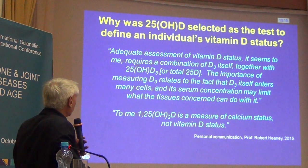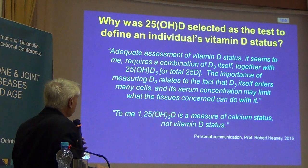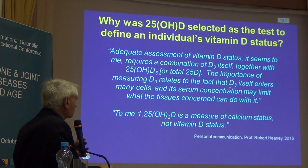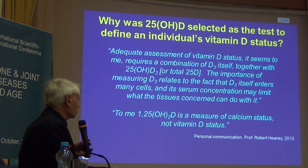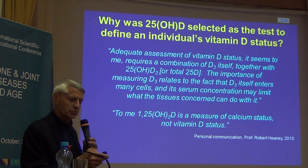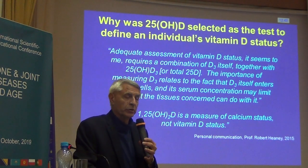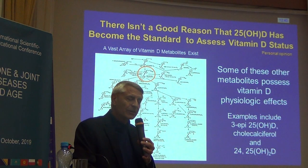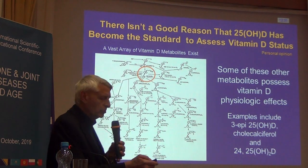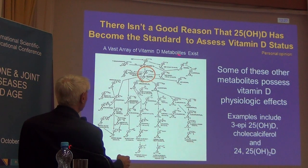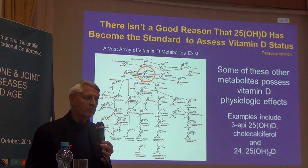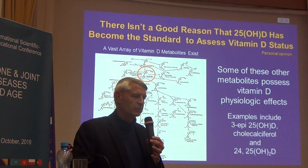The second expert I asked was Professor Robert Haney. He said we need to measure not only 25-hydroxy-D but also D3 or cholecalciferol, because D3 enters cells and its serum concentration might limit what tissues can do. He also said we shouldn't measure 1,25-dihydroxy-D because that's a measure of calcium status. I show this slide to remind you that there's a huge array of vitamin D metabolites, and we've decided to use just one — 25-hydroxy-D — to define vitamin D status, even though some other metabolites possess vitamin D physiologic activity.